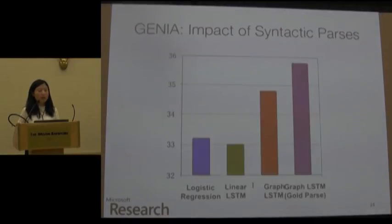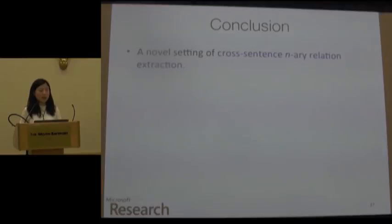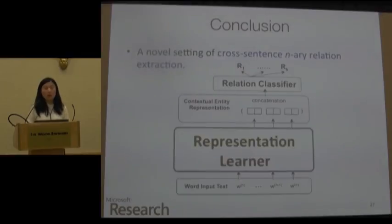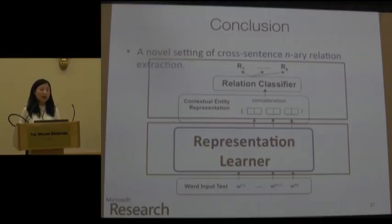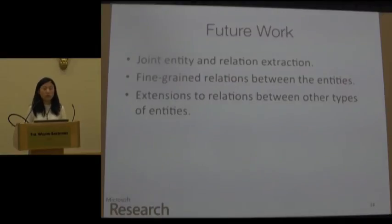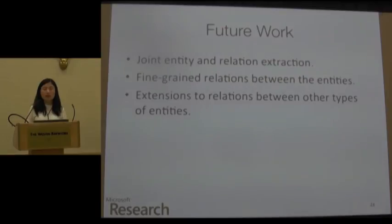In the interest of time, I'll skip some experiments evaluating how syntactic components influence our results. To conclude, we propose a framework for cross-sentence n-ary relation extraction using representation learning, improved by the Graph LSTM and multi-task learning. In the future, we want to explore joint entity and relation extraction, as well as extending to binary relations and to relations between other types of entities. Thank you for your time.